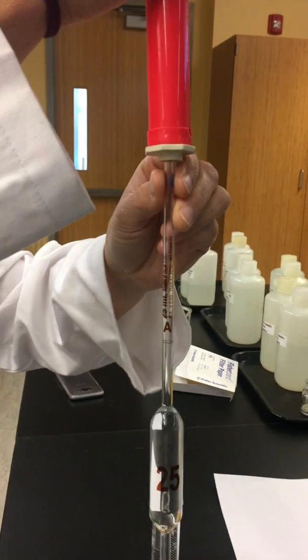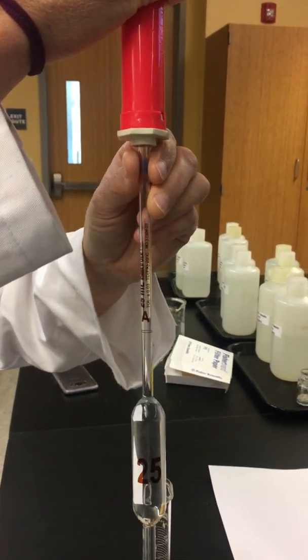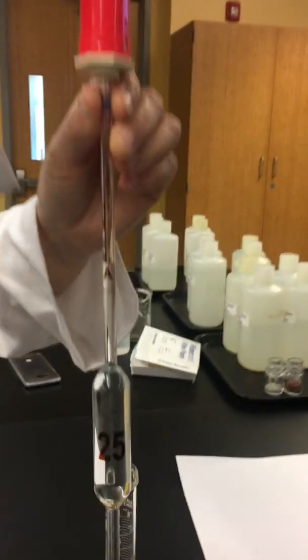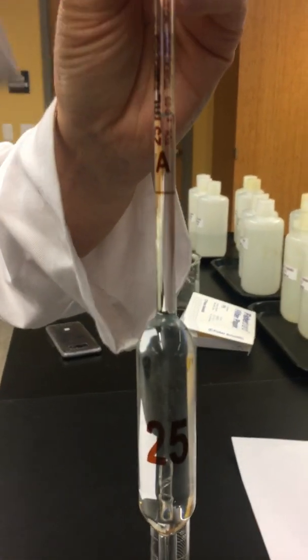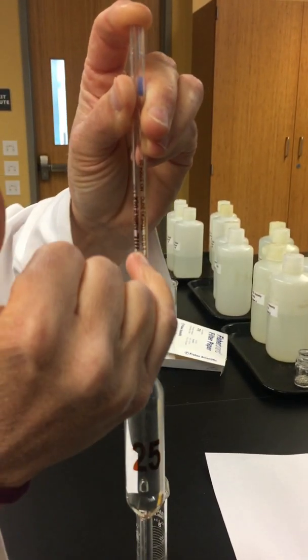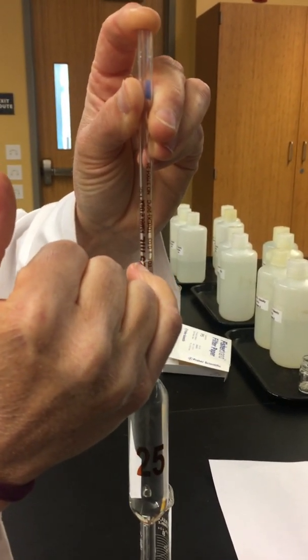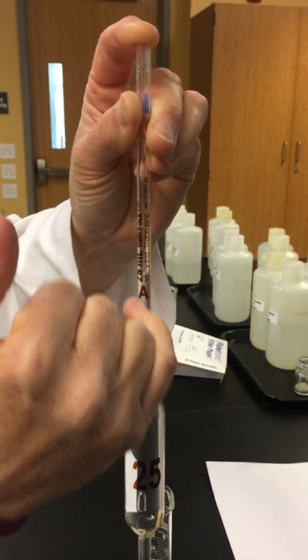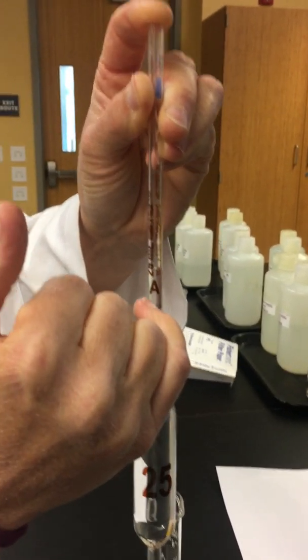And then what we're going to do is allow it to come down to that final volume. So I'll pull it up above, then we take our finger and place it on top. Now we want to allow our liquid to flow out until we get the bottom of the meniscus right on that line.